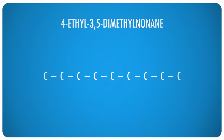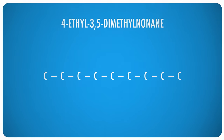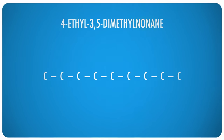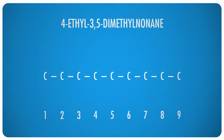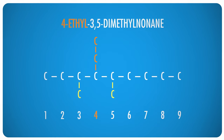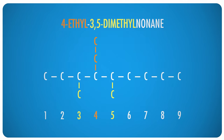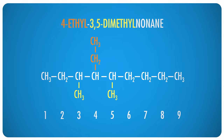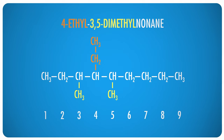This naming system is super useful, not only because there are trillions of ways organic compounds can come together, but also because you can work backward from a name and build a structural formula from it. Let's try that out — we're going to build 4-ethyl-3,5-dimethylnonane. Start with the main chain: nonane, where the prefix non indicates nine carbons. Then add an ethyl group — a two-carbon chain — on carbon number four, and methyl groups on carbons three and five. Our final step is to add enough hydrogen atoms to give every carbon atom four bonds, and the molecule is complete.